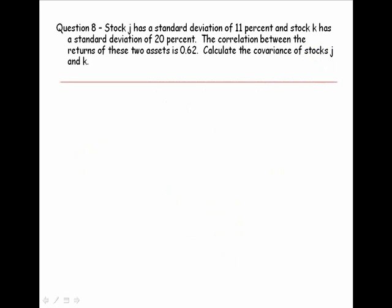Let's try this example. Stock J has a standard deviation of 11 percent. Stock K has a standard deviation of 20 percent. The correlation between the returns of these two assets is 0.62. Calculate the covariance. Let's start with our equation.